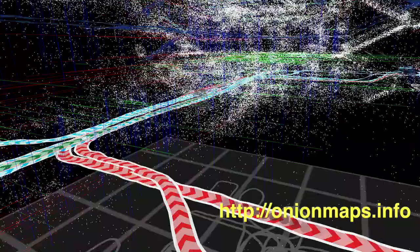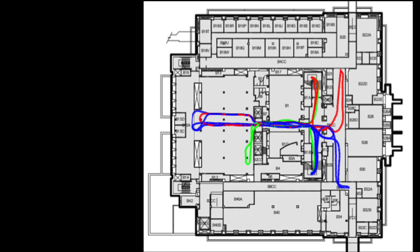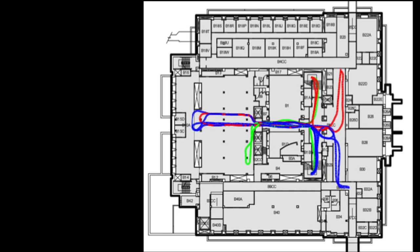In addition to the ground truth comparisons presented in our paper, we further validate our mapping algorithm by overlaying the trajectories on top of the building's blueprints. Notice that all trajectories stay within hallways and move through doorways as expected. This suggests our solution's position is well within sub-meter accuracy.